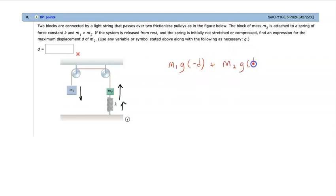Plus M2G positive D, it's going up, so this is a positive and this is a negative. This is a D, okay, and plus the spring potential energy, 1 over 2 KD squared.